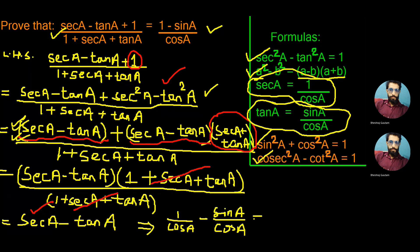As we see, the numerator terms are 1 and minus sin a, and the denominator is the same cos a in both fractions, so we take LCM. The LCM will be cos a. The numerator will be 1 minus sin a, giving us 1 minus sin a upon cos a, which is the same as RHS in the given problem. Hence LHS and RHS are now equal.